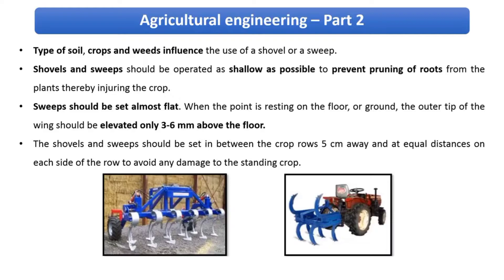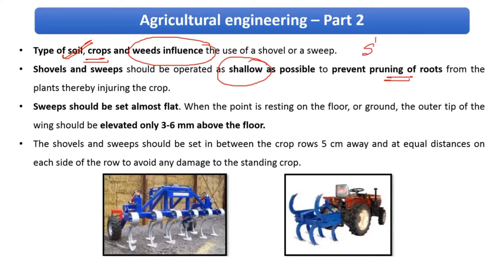How do you select a shovel or sweep? It depends upon the type of soil, type of crop, and the weeds present. For example, in hard terrain you would choose a sweep or shovel that can penetrate easily. Shovels and sweeps should be operated as shallow as possible, to prevent pruning of roots from the plants. Since these operations are performed on standing crops, we must be careful not to let the implements go deep into the soil.